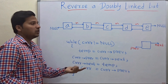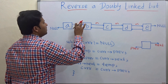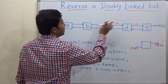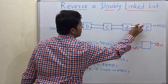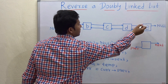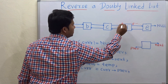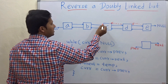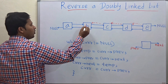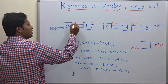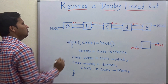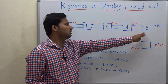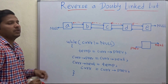After we reverse, these next pointers will be reversed. Node E will point to node D, node D will point to C, then C will point to B and B will point to A. So the doubly linked list will be E, D, C, B, A.